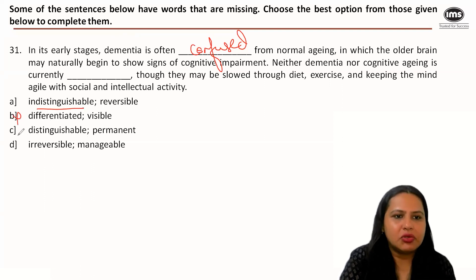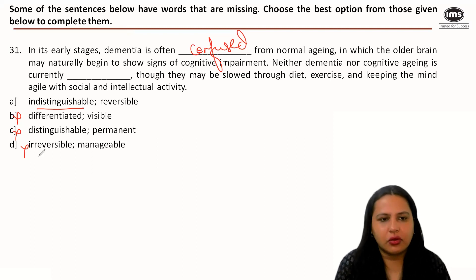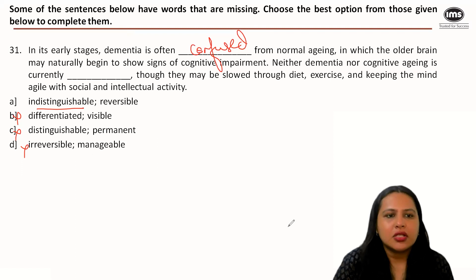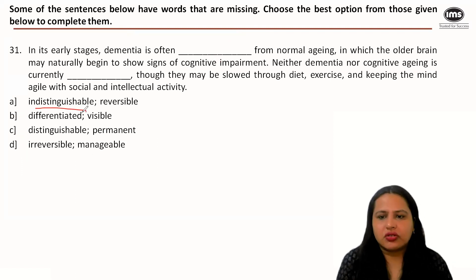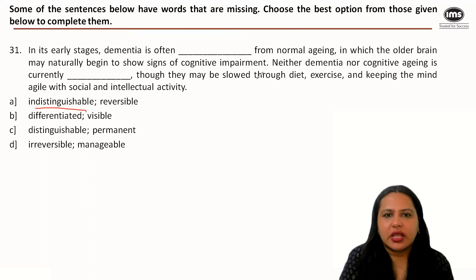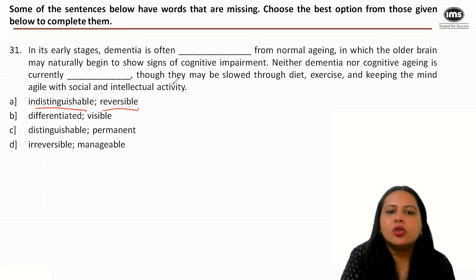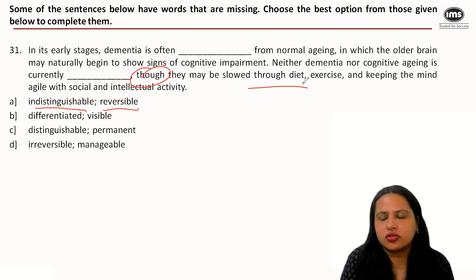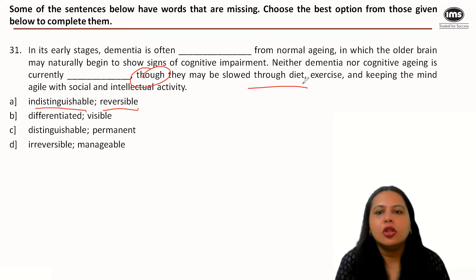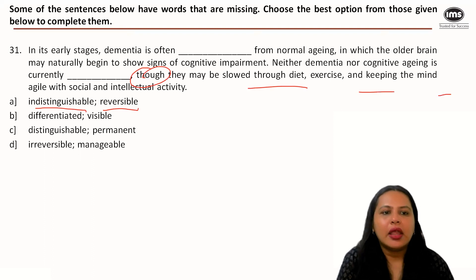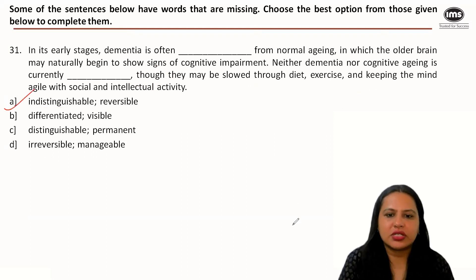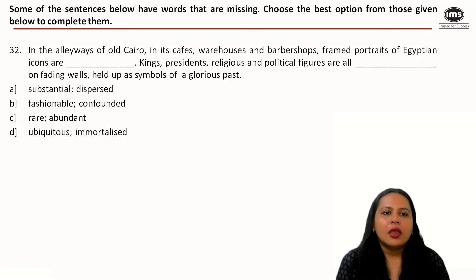Looking at the options: 'differentiated' and 'distinguishable' mean the opposite of what we need. 'Irreversible from normal aging' doesn't make sense in context. So the correct word is 'indistinguishable' — you might think it's just normal aging, but it can actually be dementia. For the second blank, these conditions cannot be reversed but can be slowed down. The correct answer is option A.